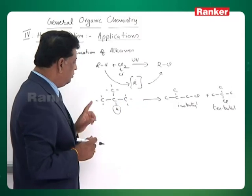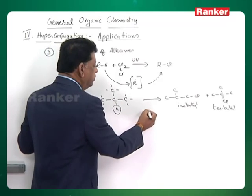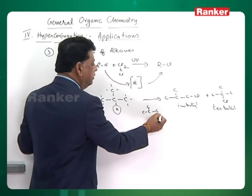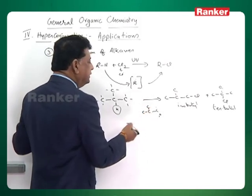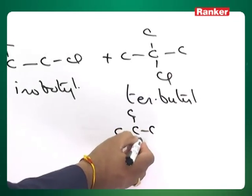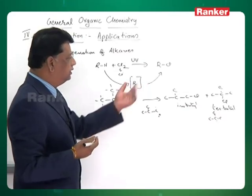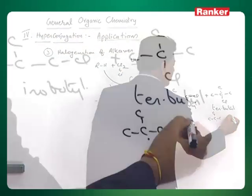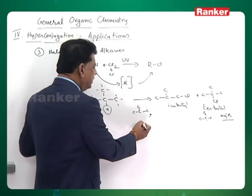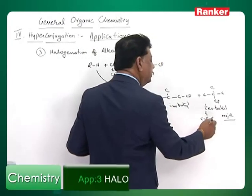Out of these, which is more stable? We have already seen this with reference to free radical stability. In the first case, the free radical will be one degree, whereas in the second case the free radical is three degree. So the first is one-time stabilized and the second is three-times stabilized. Therefore, this is the major product — identified through the inductive effect: one +I effect here, three +I effects there.